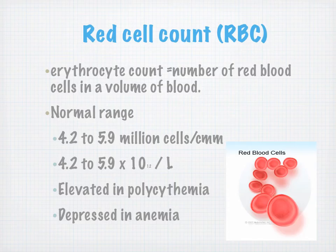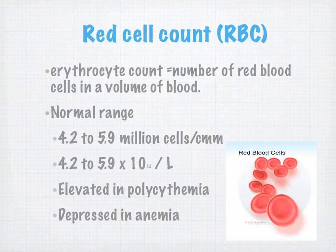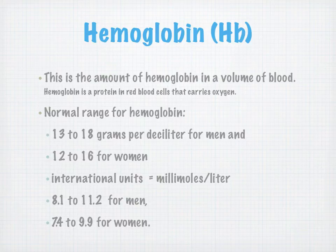The red blood cell count is the number of red cells in a volume of blood. They are elevated in polycythemia and depressed in anemia. Next is hemoglobin — the amount of hemoglobin in a volume of blood. Hemoglobin is a protein in red blood cells that carries oxygen, with normal ranges differing between men and women.